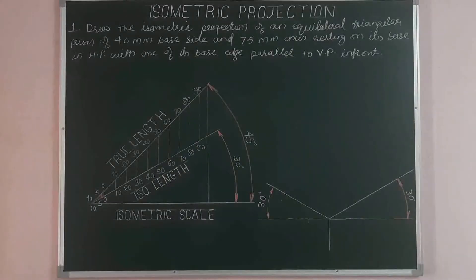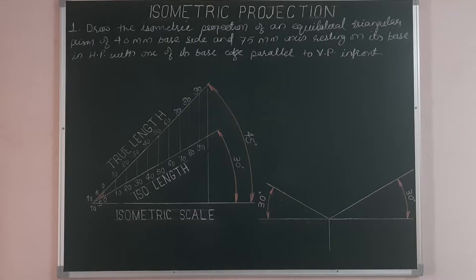Draw the isometric projection of an equilateral triangular prism of 40mm base side and 75mm axis, resting on its base in HP with one of its base edges parallel to VP in front.